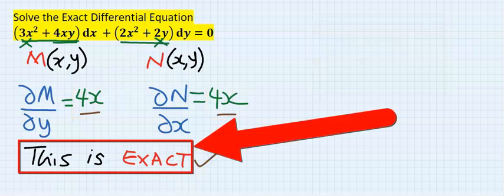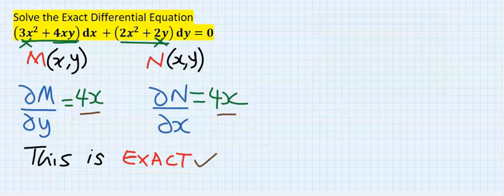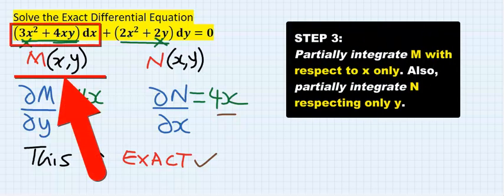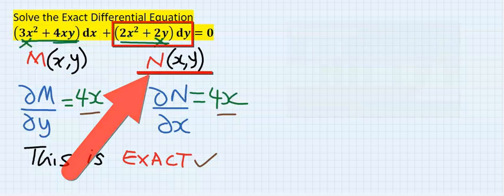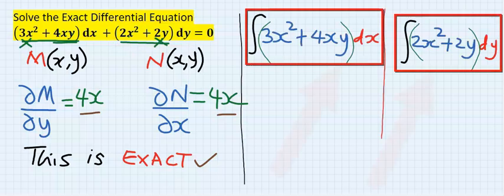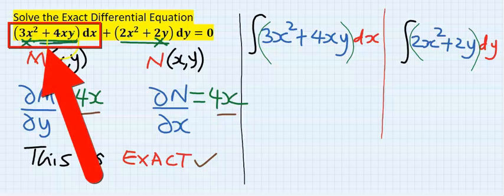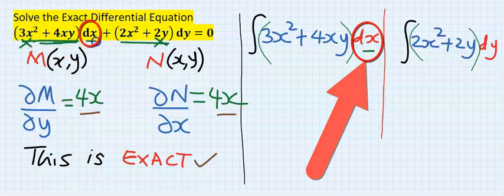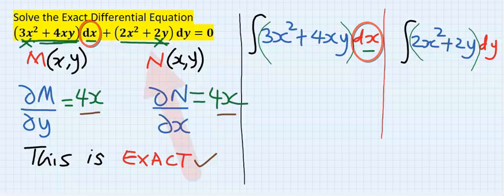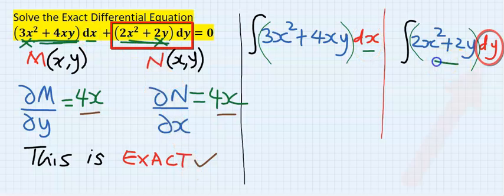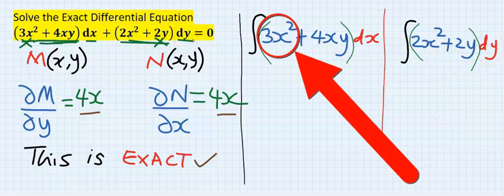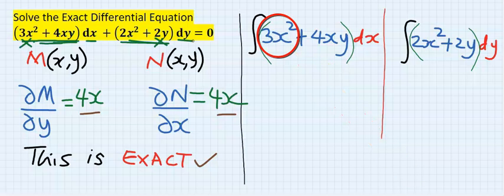Next, I will integrate M with respect to x, then I will integrate N with respect to y. This is a partial integration — integrating M with respect to x, which is the original dx, and integrating N with respect to y, which is the original dy. Integrating partially with respect to x gives x to the power of 3.